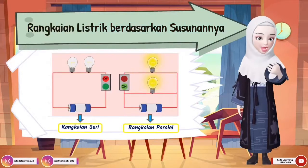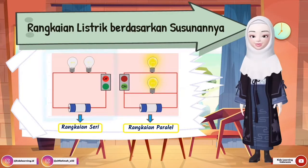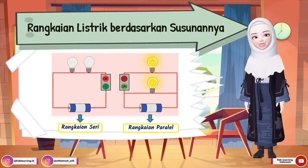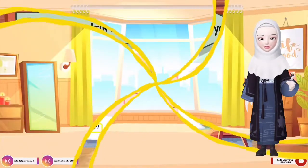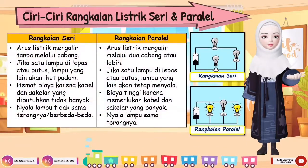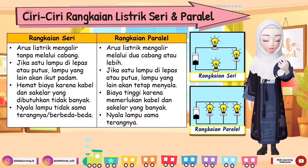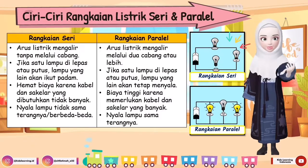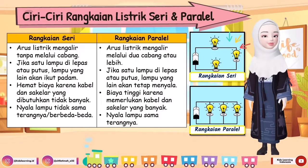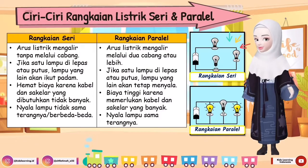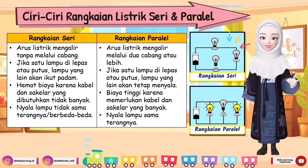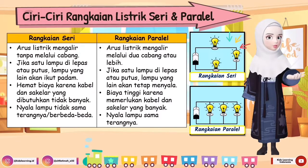Rangkaian listrik berdasarkan susunannya terbagi menjadi dua, ada rangkaian listrik seri dan rangkaian paralel. Ciri-ciri rangkaian seri: arus listrik mengalir tanpa melalui cabang; jika satu lampu dilepas atau putus, lampu yang lain akan ikut padam; hemat biaya karena kabel dan saklar yang dibutuhkan tidak banyak; dan nyala lampunya tidak sama terangnya atau berbeda-beda.